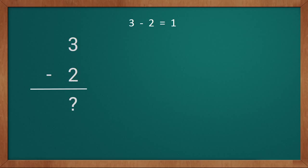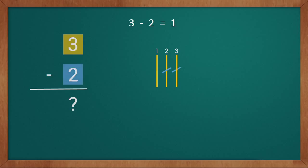Now we will learn how to solve a problem with the help of sticks. Our first value is three, so we will draw three sticks: one, two, three. We have three sticks. Now we have to subtract two from three sticks, so we remove two sticks: one, two. We removed two sticks from three sticks. Now we will see how many sticks we have. We have one stick. So the subtraction of three minus two equals one. Our answer is three minus two equals one.